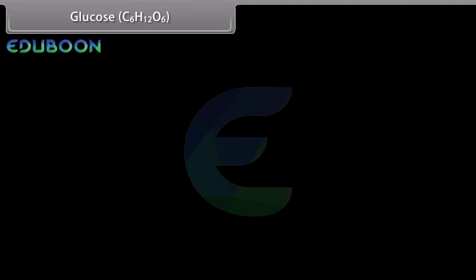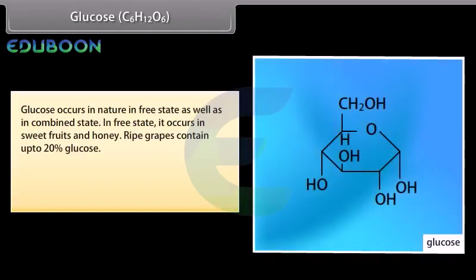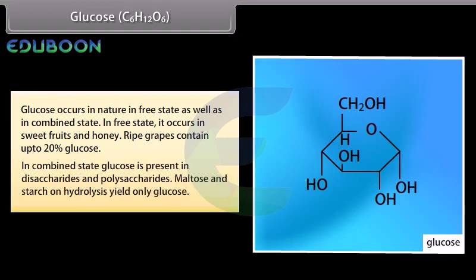Glucose has the molecular formula C6H12O6. Glucose occurs in nature in free state as well as in combined state. In free state, it occurs in sweet fruits and honey; ripe grapes contain up to 20% glucose. In combined state, glucose is present in disaccharides and polysaccharides. Maltose and starch on hydrolysis yield only glucose.